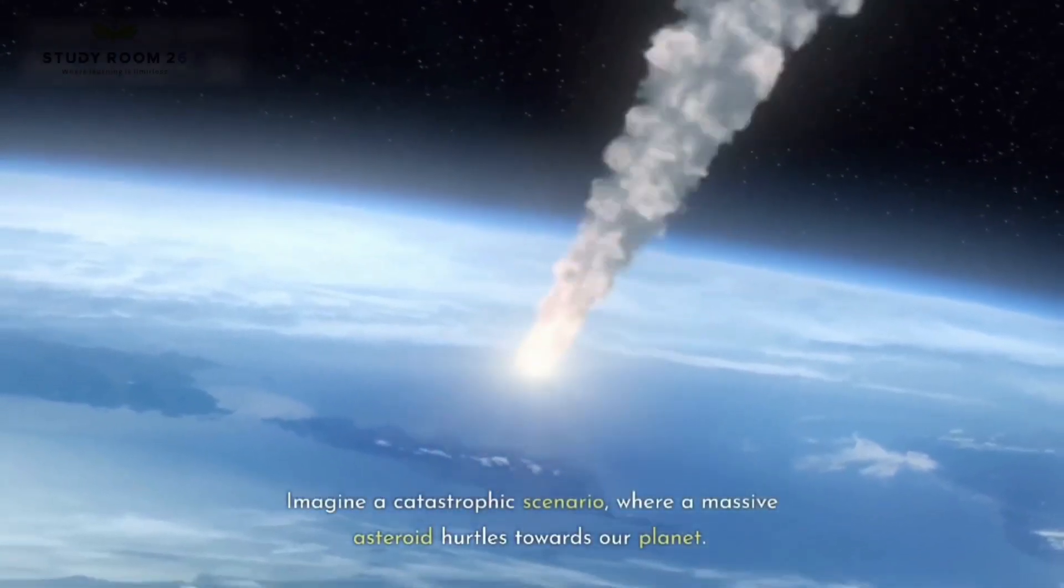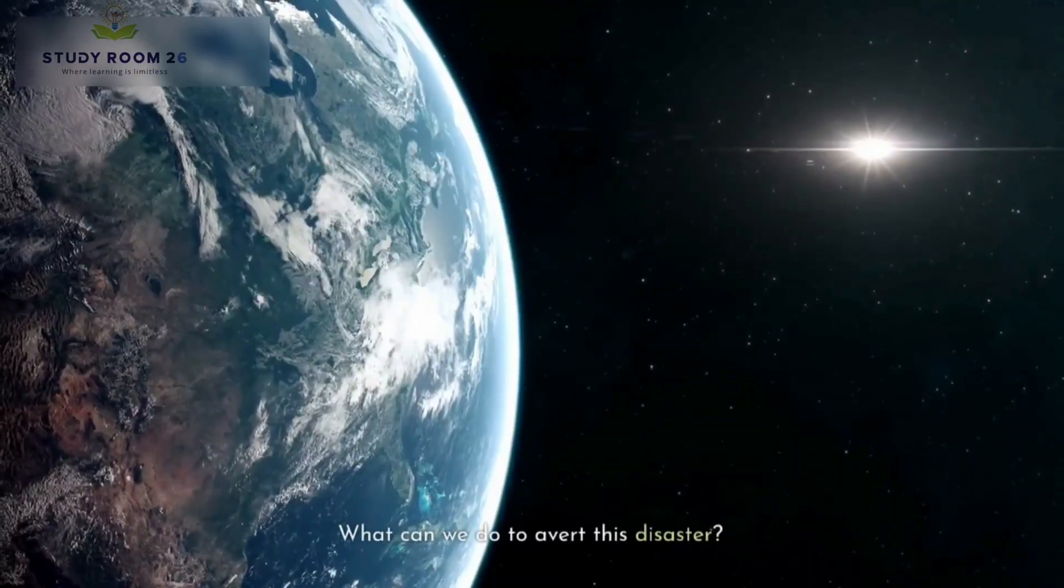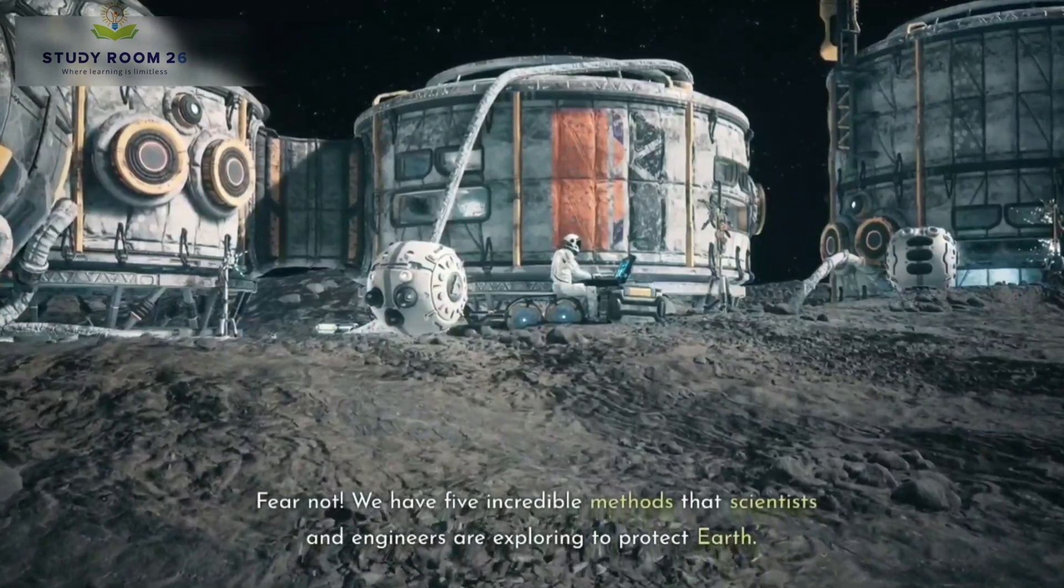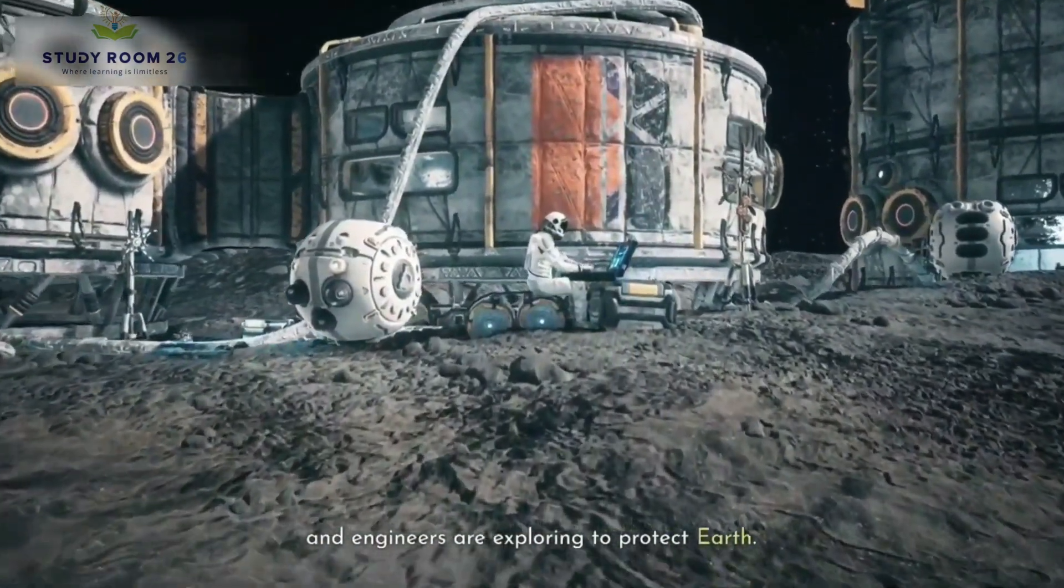Imagine a catastrophic scenario where a massive asteroid hurtles towards our planet. What can we do to avert this disaster? Fear not. We have five incredible methods that scientists and engineers are exploring to protect Earth.